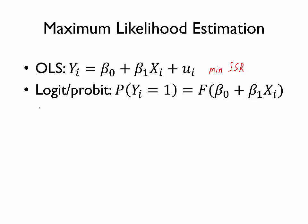In more technical terms, we are going to define the likelihood as the product of a number of things. Recall that the probability of multiple independent things happening at the same time is the product of those probabilities. So we are going to multiply together the probability of observing the actual outcome for observation one, multiplied by the probability of observing the actual outcome for observation two, and so forth. The likelihood is the product of all of these probabilities.